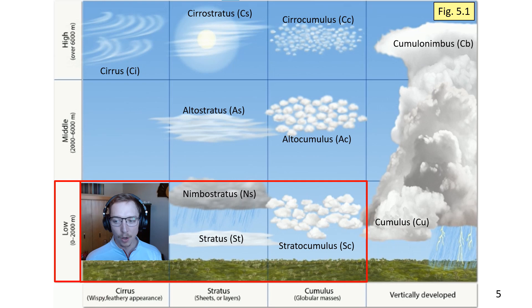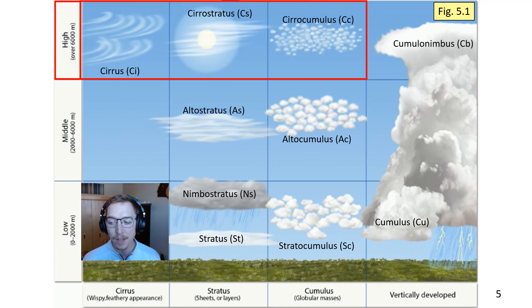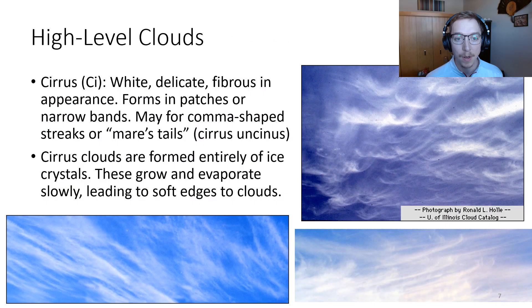Moving into height designators: low clouds exist near Earth's surface up to about 2,000 meters, generally composed of water droplets with some ice in winter. Middle clouds occupy heights from about 2,000 to 6,000 meters and may be composed of water droplets and ice. High clouds form in the highest and coldest regions of the troposphere, normally with bases around 6,000 meters, mostly composed of ice crystals or super-cooled water droplets. We're going to start top to bottom with cirrus, cirrostratus, and cirrocumulus clouds.